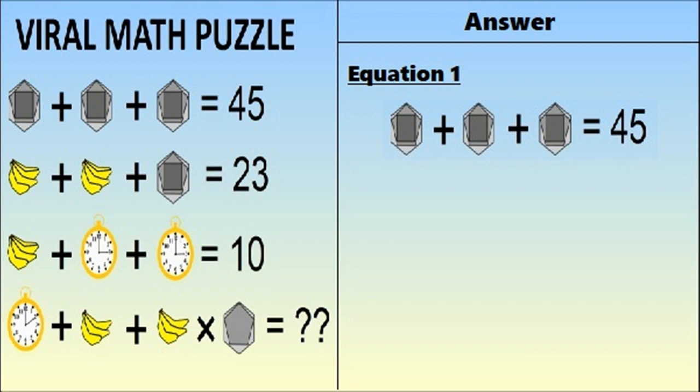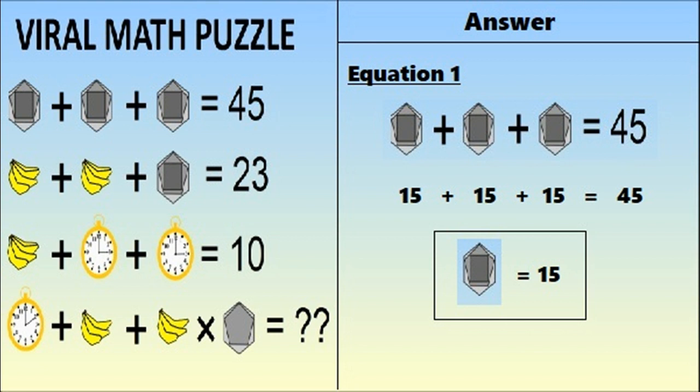In equation 1, a shape plus a shape plus a shape equals 45 — so 15 plus 15 plus 15 equals 45. The shape shown is a hexagon containing a pentagon, which contains a square. A hexagon has 6 sides, a pentagon has 5 sides, and a square has 4 sides. So 6 plus 5 plus 4 equals 15 — therefore the shape equals 15.